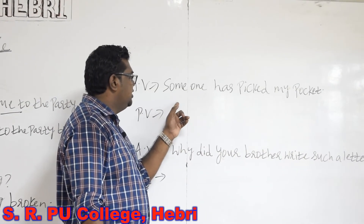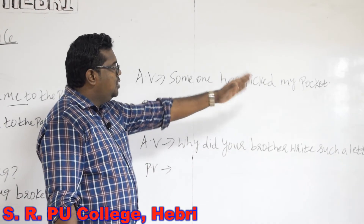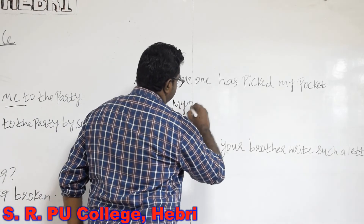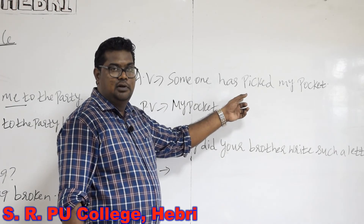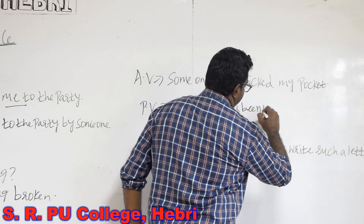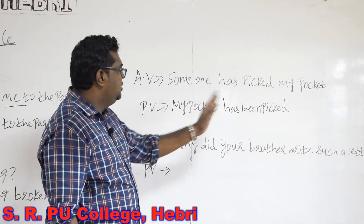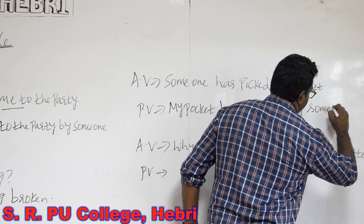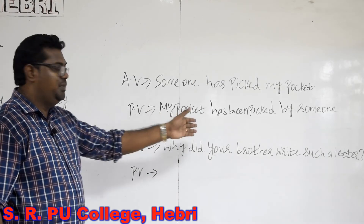Next sentence: Someone has picked my pocket. Here 'my pocket', which is the object in active voice, will become the subject. The main verb is 'has picked' and the passive form is 'has been picked' — it is in present perfect tense. Then the preposition 'by' and the object 'someone'. So 'Someone has picked my pocket' is changed to 'My pocket has been picked by someone'.